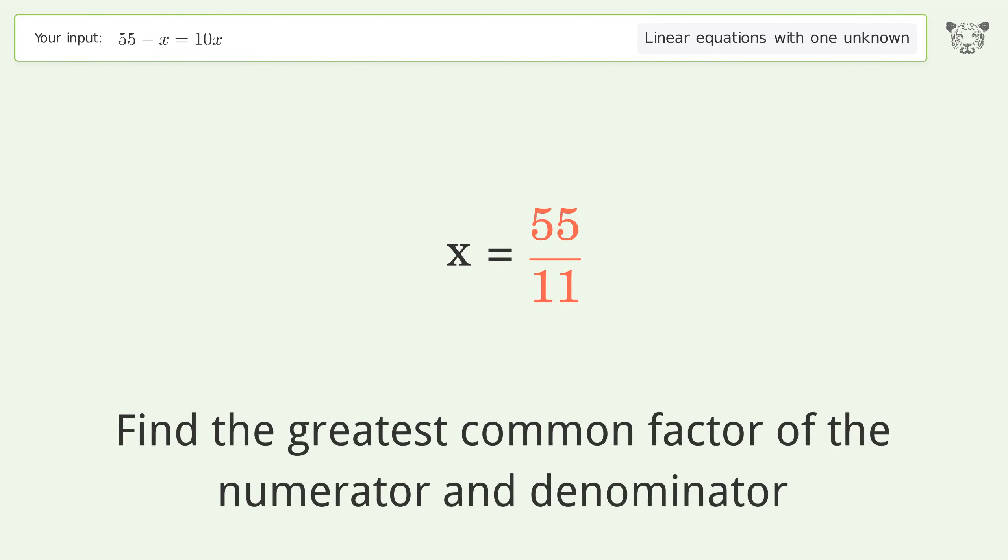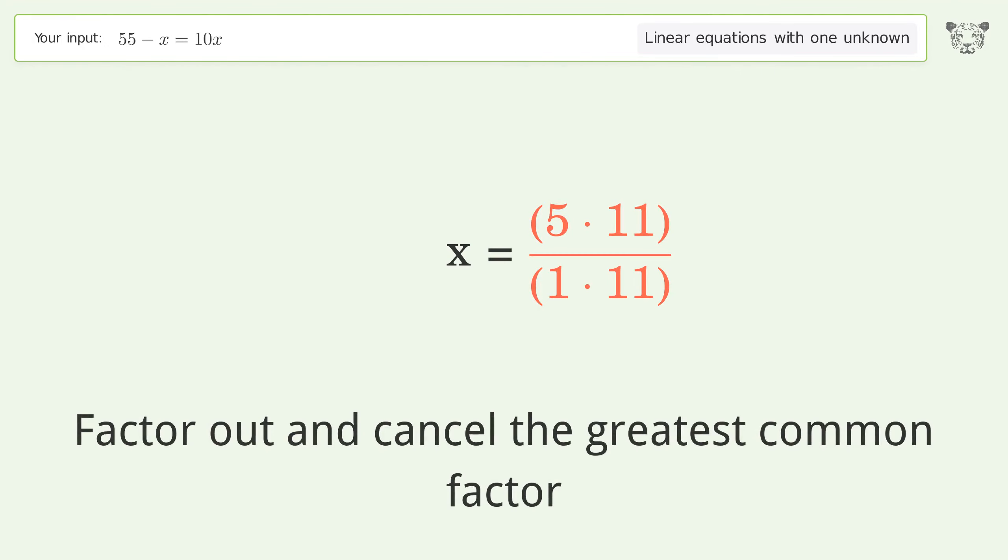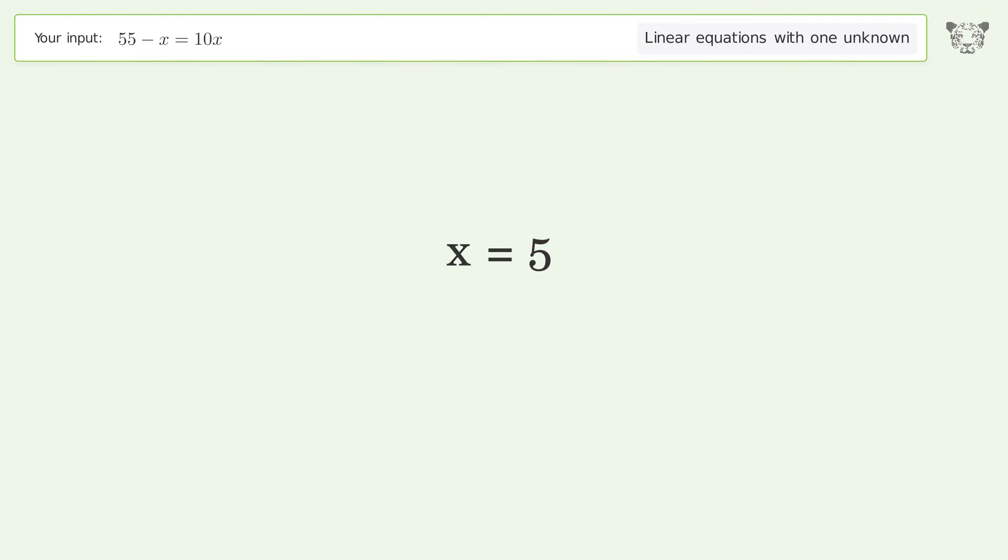Find the greatest common factor of the numerator and denominator. Factor out and cancel the greatest common factor. And so the final result is x equals 5.